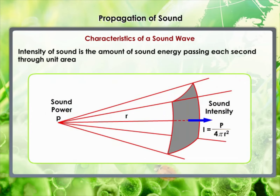The amount of sound energy passing each second through unit area is called the intensity of sound. We sometimes use the terms loudness and intensity interchangeably, but they are not the same. Loudness is a measure of the response of the ear to the sound. Even when two sounds are of equal intensity, we may hear one as louder than the other simply because our ear detects it better.